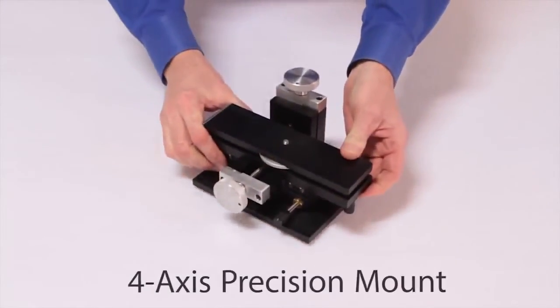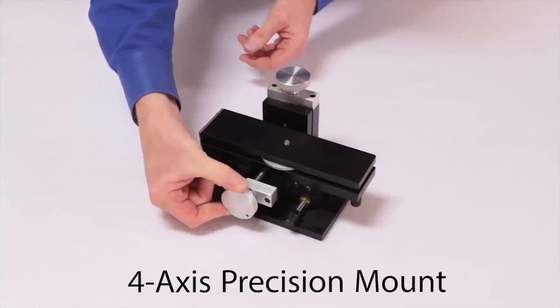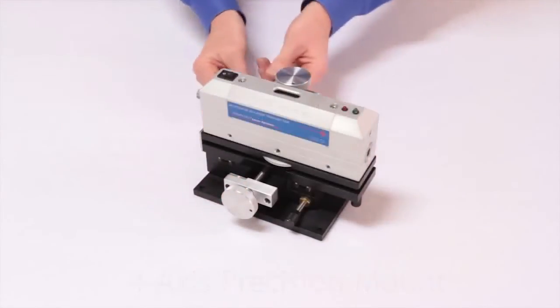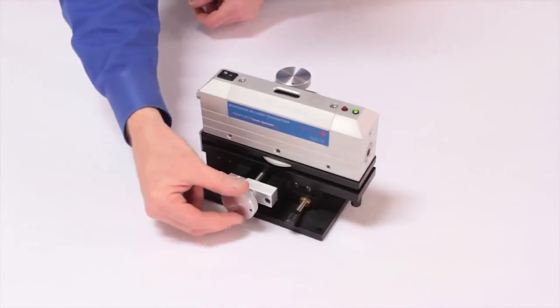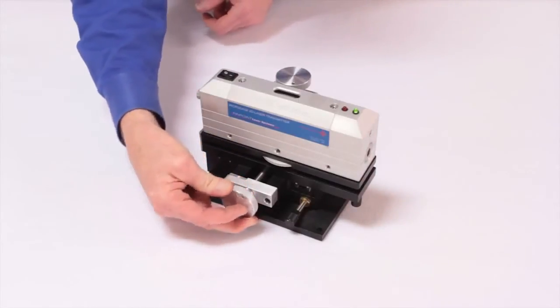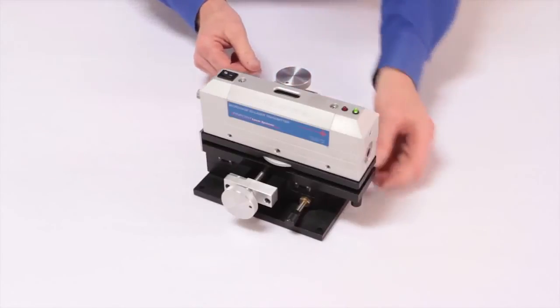Another popular accessory is our four axis precision mount. This mount is used to precisely and accurately position the laser. The control knobs allow the user to control the laser in both a vertical and horizontal position, as well as two angular motions, pitch and yaw.